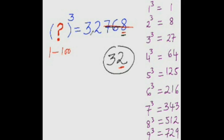All you need to do is find the number whose cube is nearest to this remaining number — either equal to it or less than it. For example, 3 cubed is 27 and 27 is near to 32. 4 cubed is 64, which is more than 32, so it's out of the question. So find the number whose cube is either equal to the remaining number or less than that.